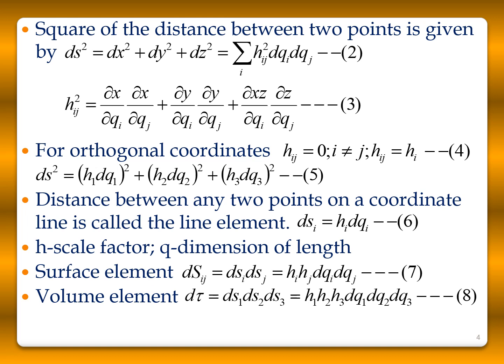The surface element dSij = dsi · dsj = hi hj dqi dqj, representing the product of two line elements along directions i and j. For the volume element, dτ = ds1 · ds2 · ds3, and substituting the line elements gives dτ = h1 h2 h3 dq1 dq2 dq3.